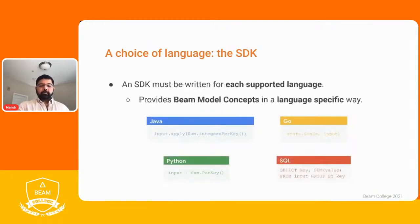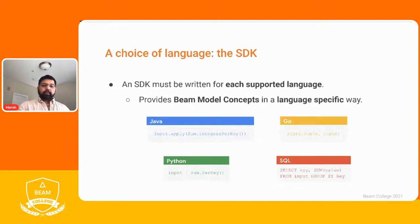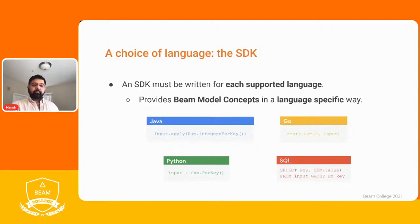An SDK must be written for each supported language — Java, Go, Python, SQL as examples. These languages provide the Beam model concepts in that specific language of choice. The Beam model has various concepts such as ParDos, readers, writers, GroupByKey, and windowing. Each language can provide these concepts in a manner suitable for that language. For instance, Java, being object-oriented, can have the syntax of input.apply, while Python can have a different syntax, and SQL can have its own syntax — but they all internally map to the same concepts.